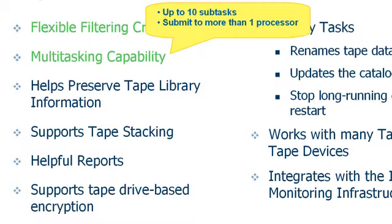The multitasking feature helps complete a copy job much faster. You can run up to 10 subtasks concurrently for a single copy job. Also, you can submit a copy job on more than one processor.